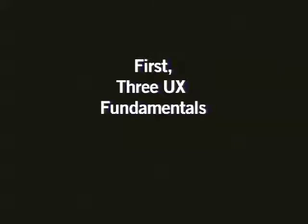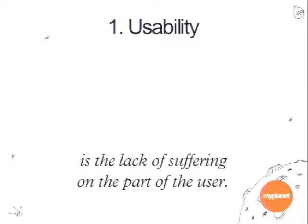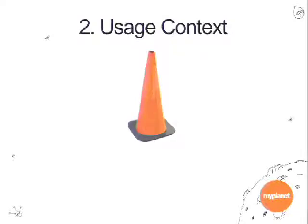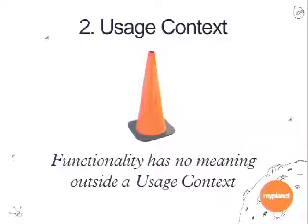I want to talk about three fundamental concepts from the user experience point of view — three tricks of the trade I use routinely. The first is my definition of usability: usability is simply the lack of suffering on the part of the user. I like the image of barbed wire dancing shoes — if you were to use them it would hurt. It's a good visual metaphor for the scenario we're trying to avoid in UX design.